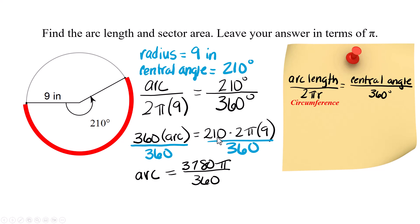And we end up with the arc equal the 360s cancel out here so arc is on this side. On this side we have 210 times 2 times 9 that's 3780. I didn't multiply the π through. I'll explain that in a second and that's divided by 360.